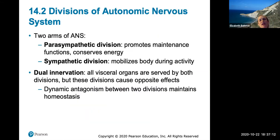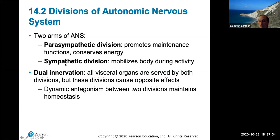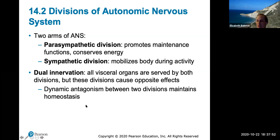The two branches of the ANS: the parasympathetic division promotes maintenance functions and conserves energy — it's your rest-and-digest division. The sympathetic division mobilizes the body during activity, making you aware of your surroundings; it's usually activated during stress. Many visceral organs are dually innervated by both divisions, but innervation causes opposite effects. For example, the sympathetic division increases heart rate while the parasympathetic division decreases it — a dynamic antagonism that maintains homeostasis.